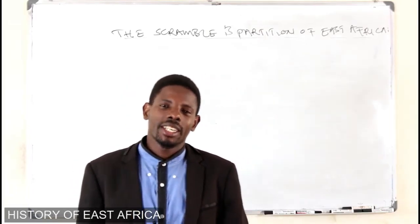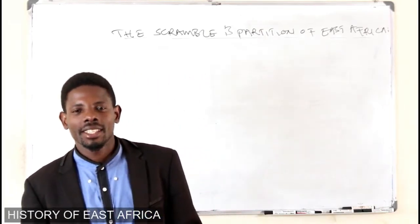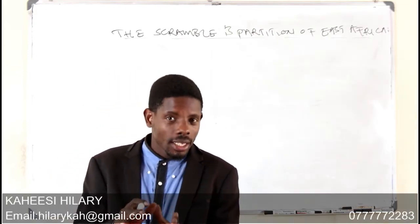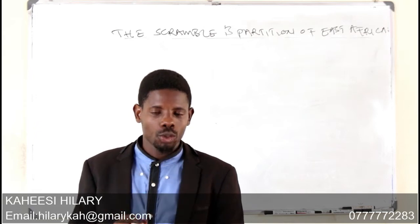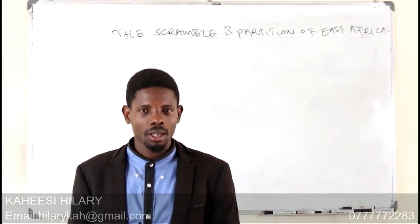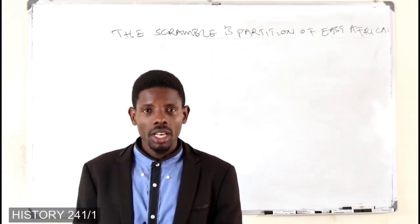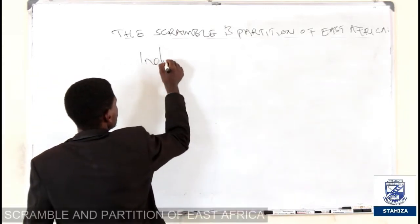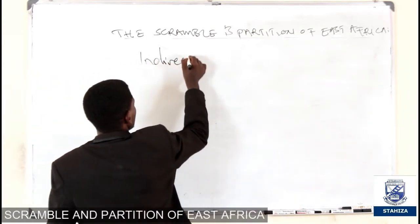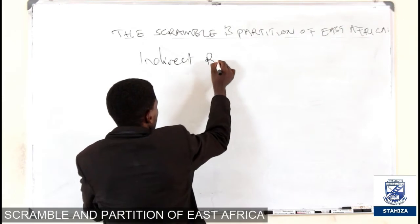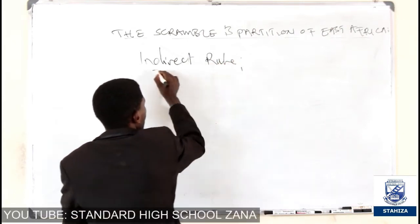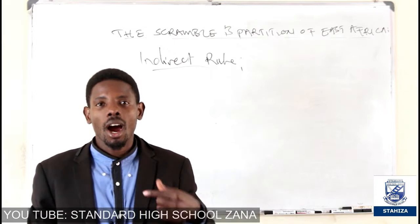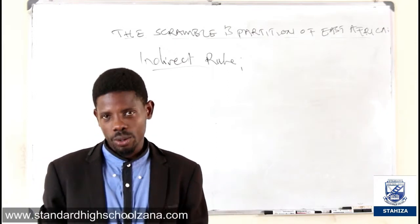This is your teacher, Kahes Kirare, the teacher of History at Standard High School Zana. We are still moving with the topic of indirect rule in this episode, and we are going to see how the British used indirect rule in their colonies, including our country, Uganda.